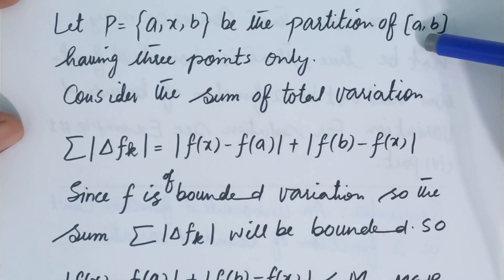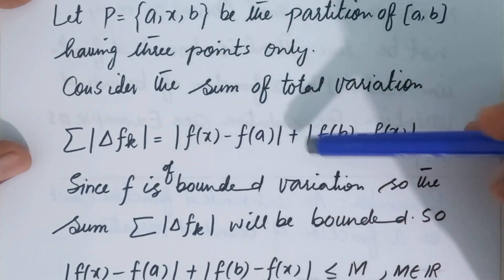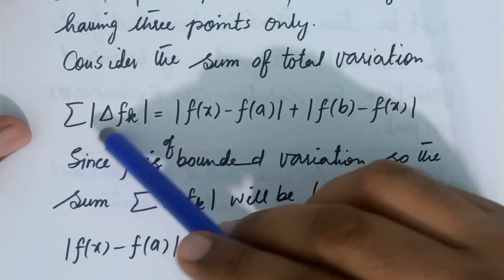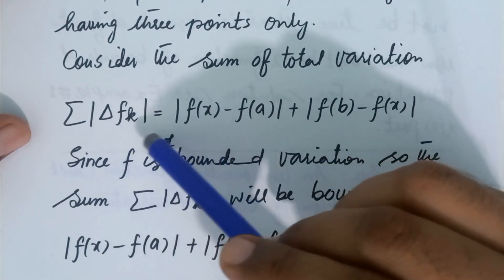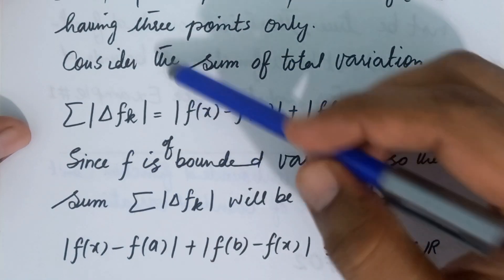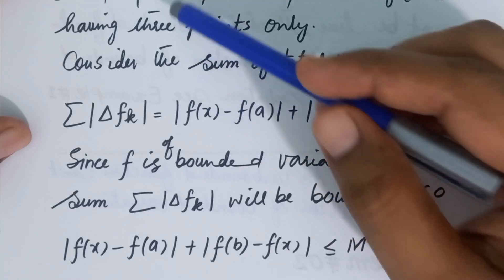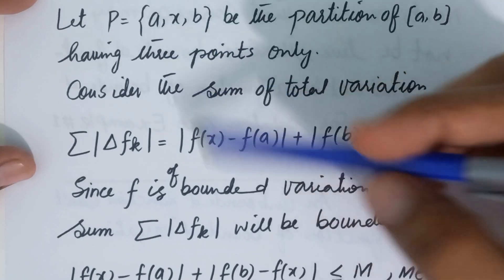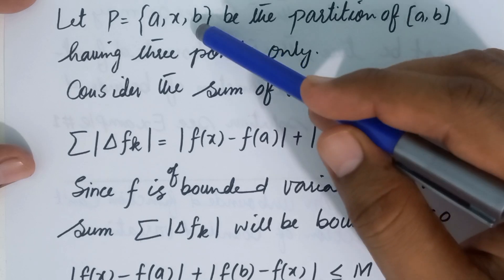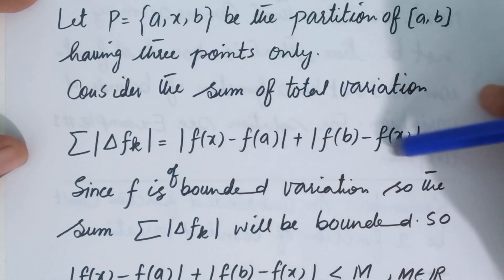For our purpose, suppose there is a partition P containing just three points: a, x, and b. This is a partition of the closed interval [a, b]. Over this partition, we find the sum of total variation, which is the summation of |Δf_k|. This summation opens as |f(x) − f(a)| plus |f(b) − f(x)|.